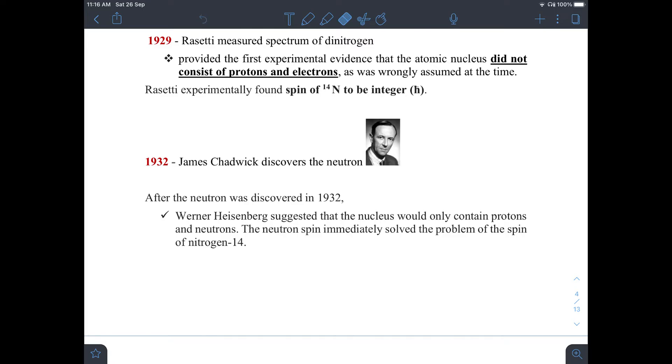James Chadwick discovered neutrons. Immediately after the discovery of neutrons in 1932, Heisenberg suggested that the nucleus contained protons and neutrons. The neutron spin half solved the problem of the spin of nitrogen-14. The last unpaired proton and the last unpaired neutron add up to the final total spin of one h cross, which is in agreement with the Raceti spectrum.